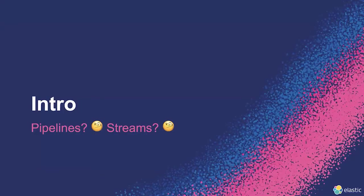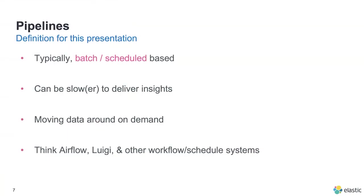So pipelines and streams — what are they? Pipelines are an incredibly overloaded term in this industry, but for this presentation we can define them as something that's batch or schedule-based, something that's ETL. They are typically slower to deliver insights, and we move the data around on demand. Think Apache Airflow, Spotify's Luigi tool, or other workflow schedule-based systems such as Jenkins, TeamCity, and other CI builds.